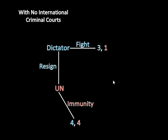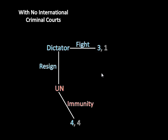Now we just have a regular game tree, and this is easy to solve. We look at what is optimal for the dictator: if he resigns and the United Nations grants him immunity, he gets a payoff of 4. Alternatively, if he were to fight, he gets 3. The blue 4 and the blue 3 are the choices the dictator really has to care about, and 4 is greater than 3, so the dictator would want to resign. The conclusion is that in a world without international criminal courts, the dictator resigns and the United Nations grants immunity, and both get a payoff of 4.